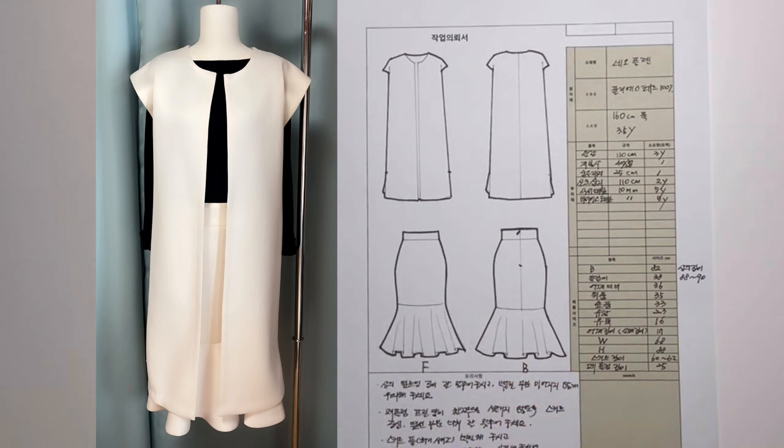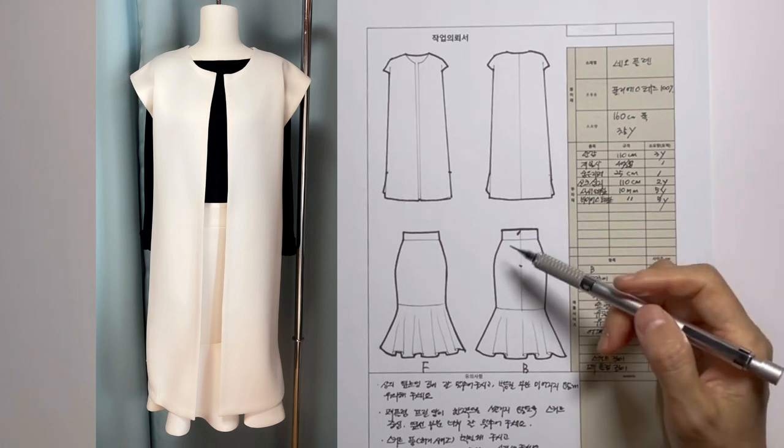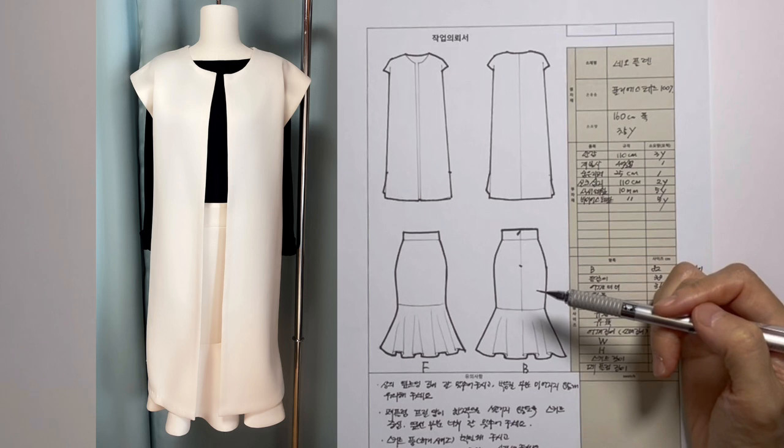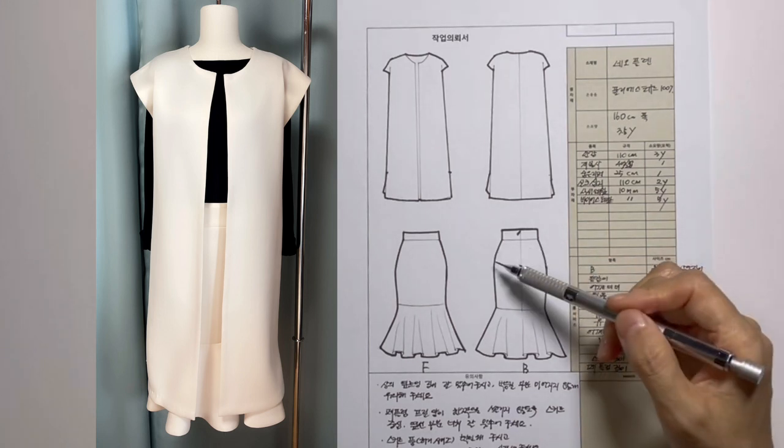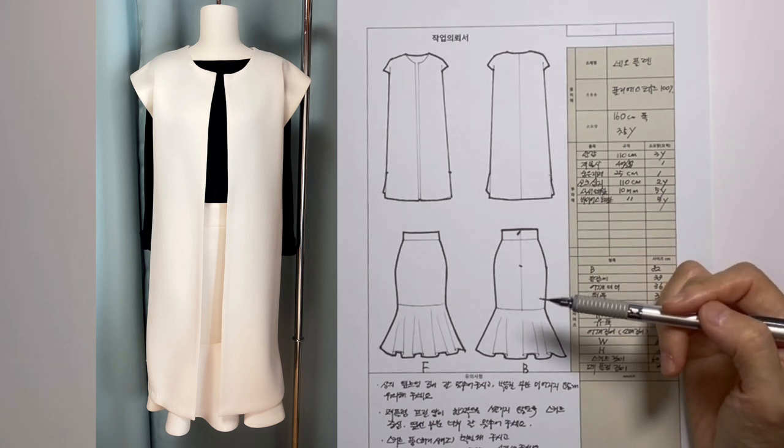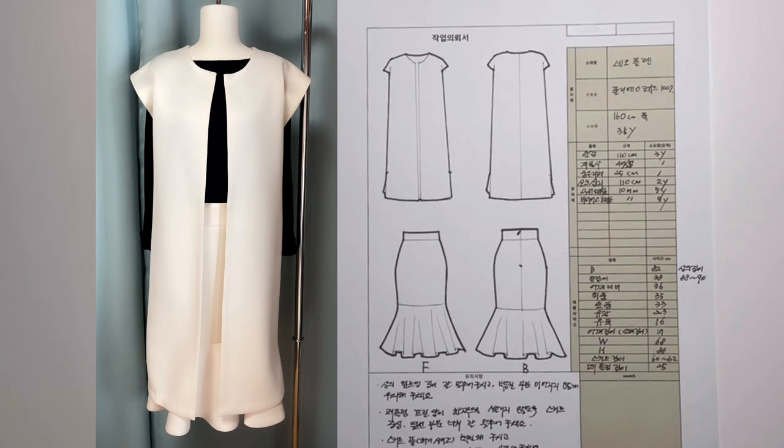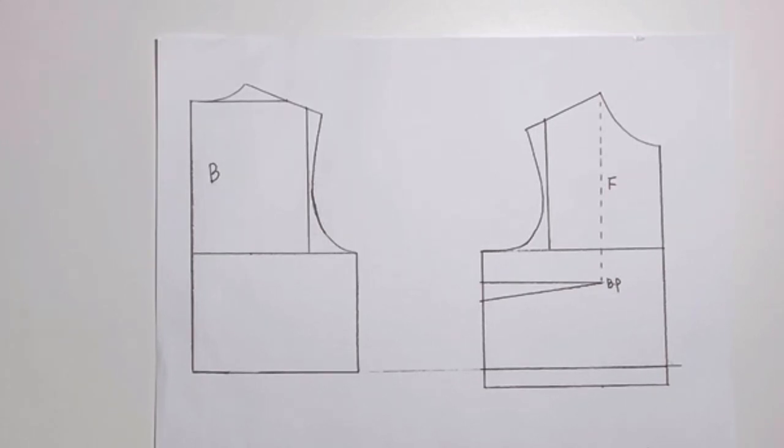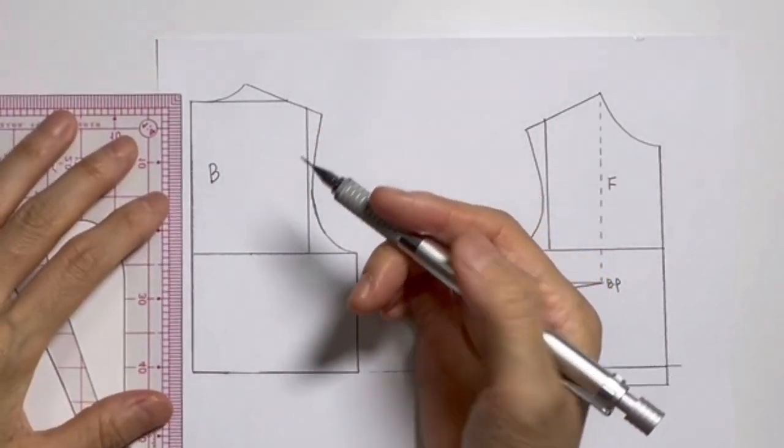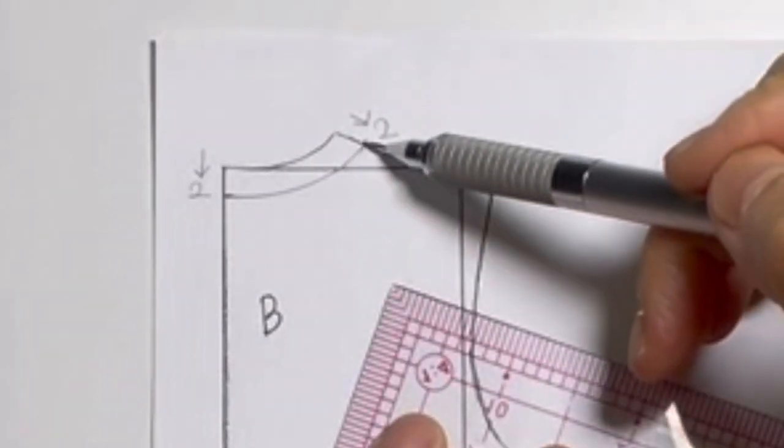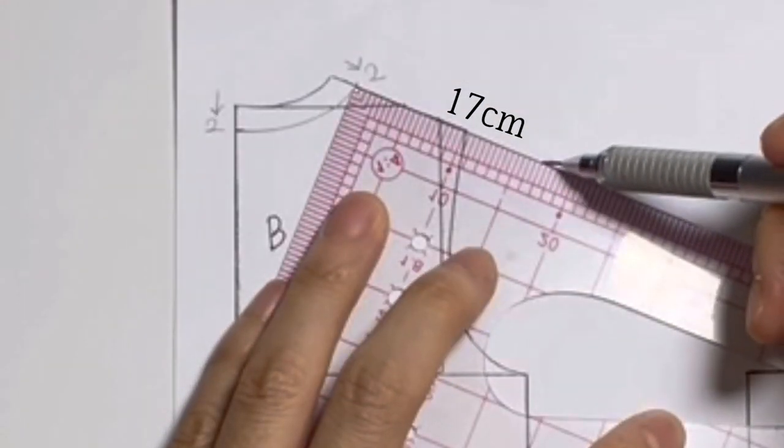Starting with the back piece. The neckline: the upper edge of the neck, the upper end is 2cm. The upper end will cut the edge at 17cm from the neck.